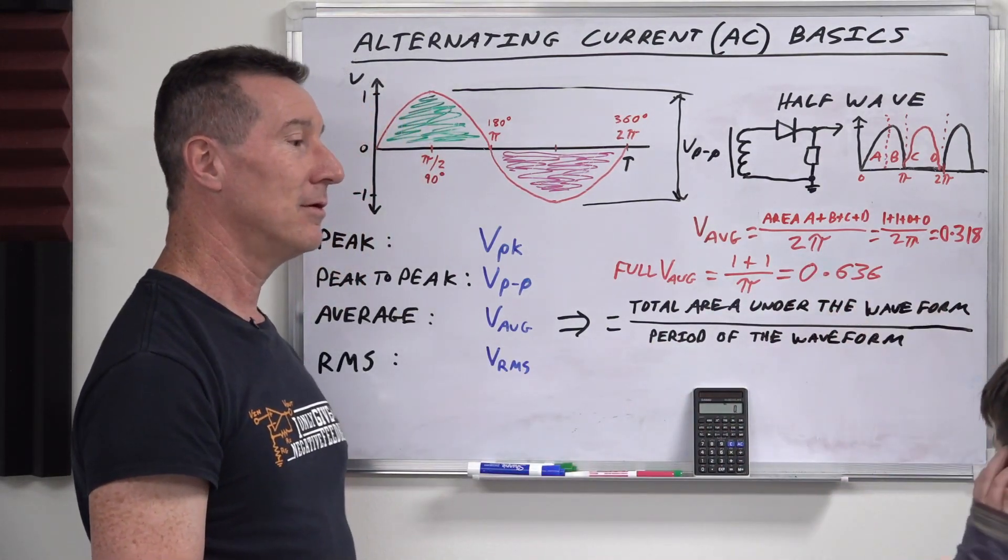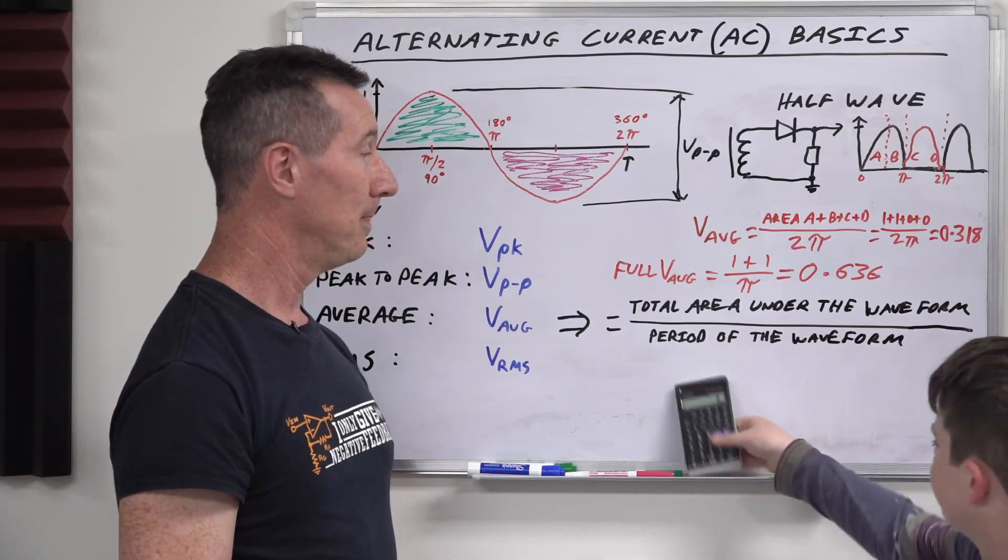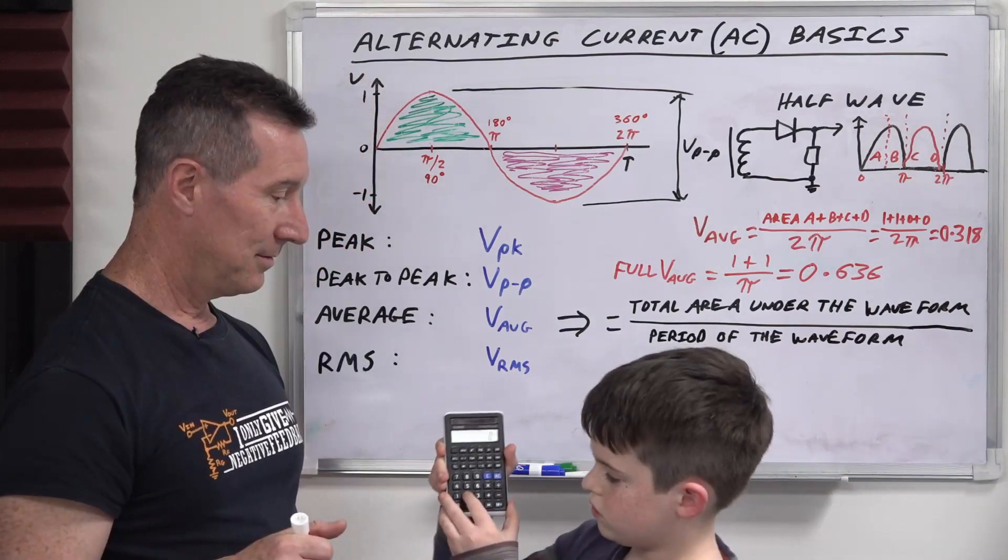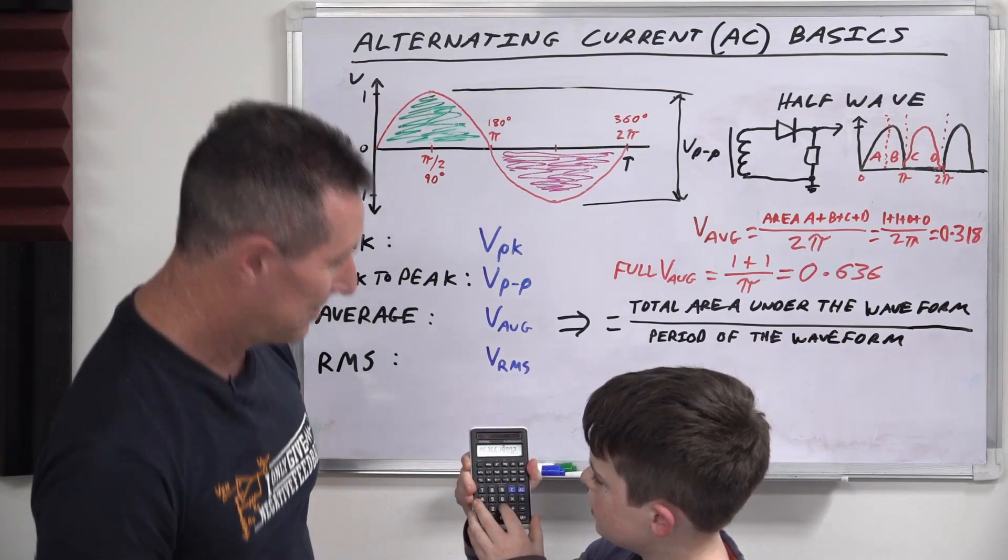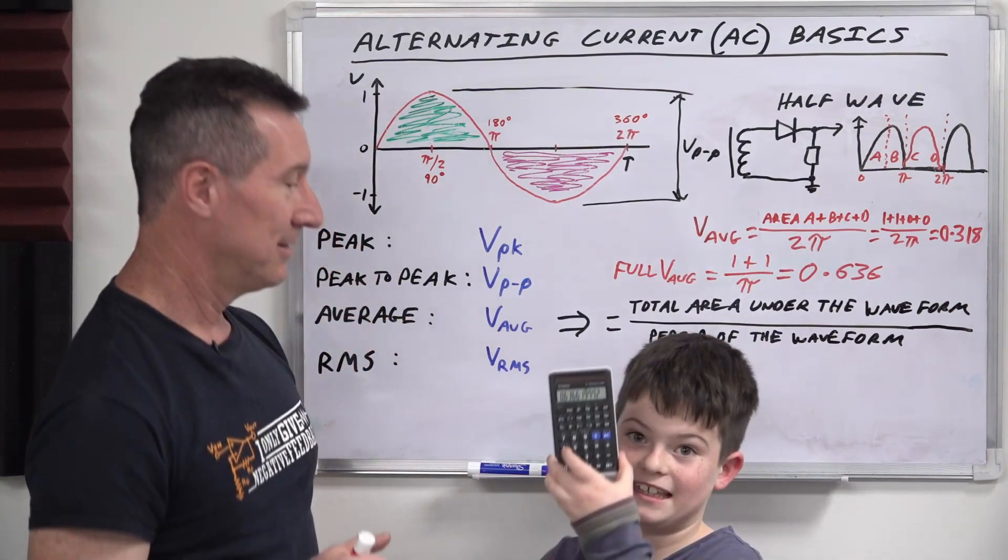Why would it be 637? Because when you go into the calculator here, if you go 2 divided by π equals 0.6366.